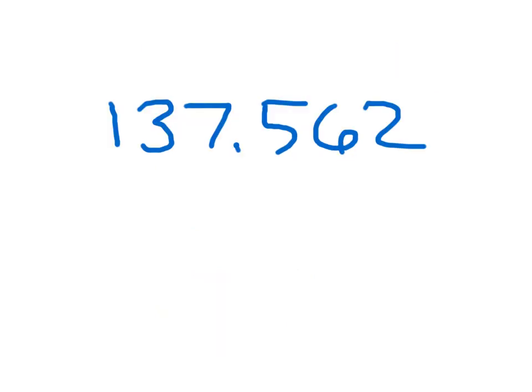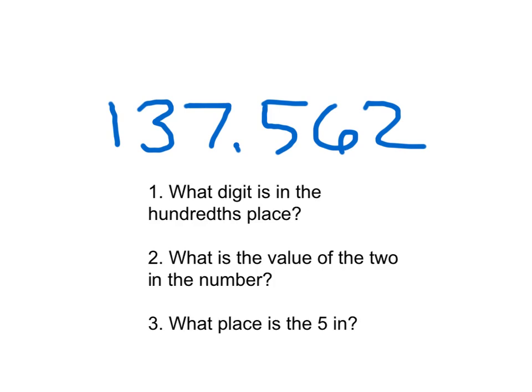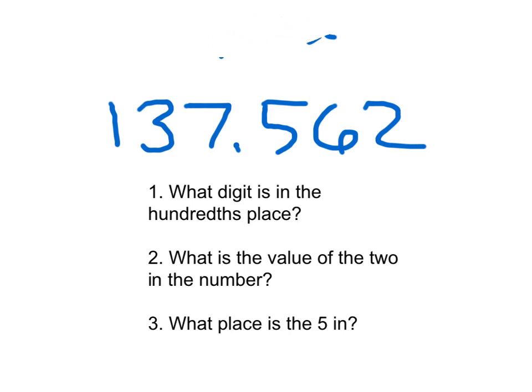One last final review. This is 137 and 562 thousandths. Answer these questions. Please hit pause on the video and solve those questions. For that first problem, it says: what digit is in the hundredths place? This here is the thousandths place, this here is the hundredths place, this here was the tenths place. So the digit is six.